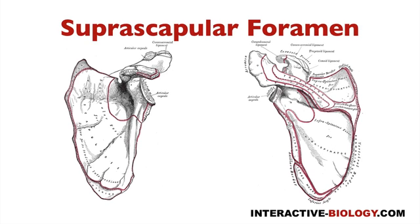The first gateway is called the suprascapular foramen. Anytime we say foramen, we're talking about an opening. Here we have an anterior view of the scapula, and we can see this little notch that we call the scapular notch. You can also see it from the posterior view.